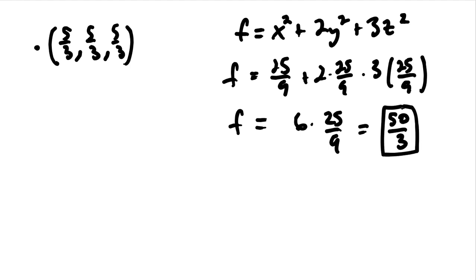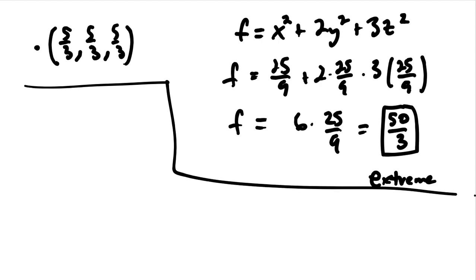When Lagrange only gives you one value out, what you need to do is pick another value on your constraint. We know that Lagrange gives you extrema. We just don't know if it's extreme max or extreme min when it's only one of them that comes out. And so here's the method to know whether it's extreme max or extreme min. We can find another point on our constraint. Our constraint was that x and 2y and 3z must add up to 10.